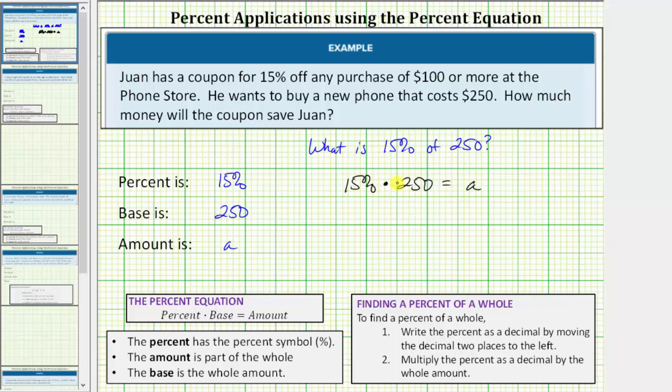Notice the left side of this equation is the same product we had to find the percent of a whole. 15% as a decimal is 0.15 times 250 equals a. So a equals, again we know this product is equal to 37.5. Whichever approach we take, we know that Juan saves $37.50.